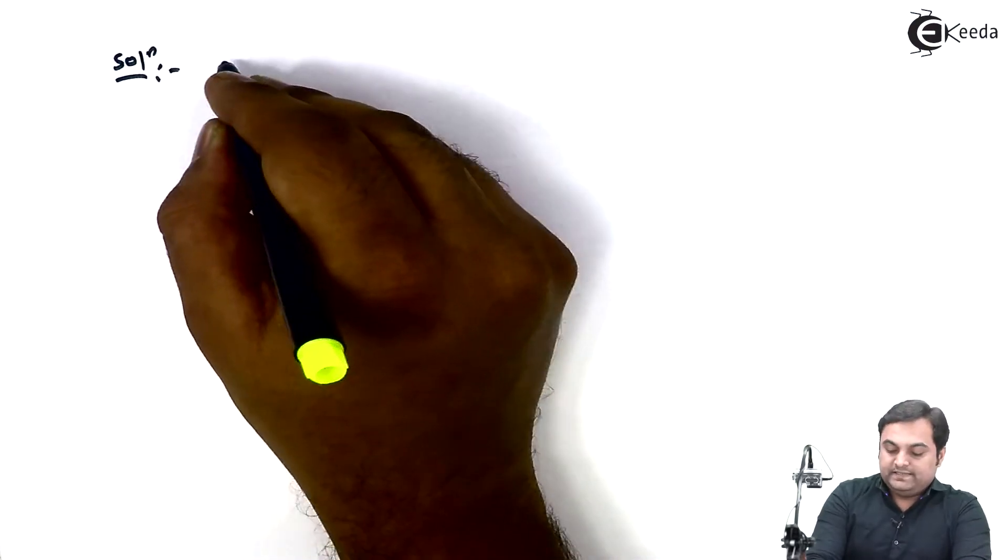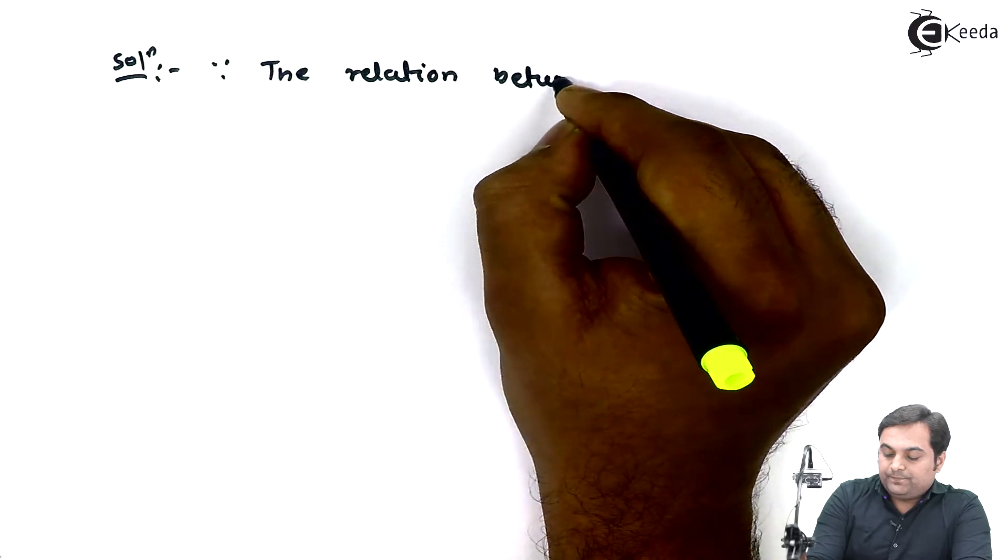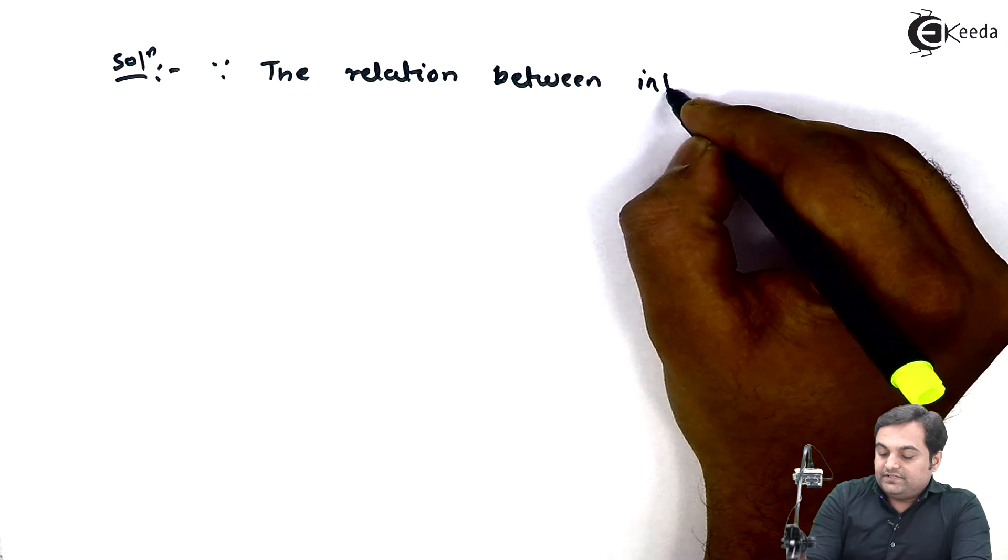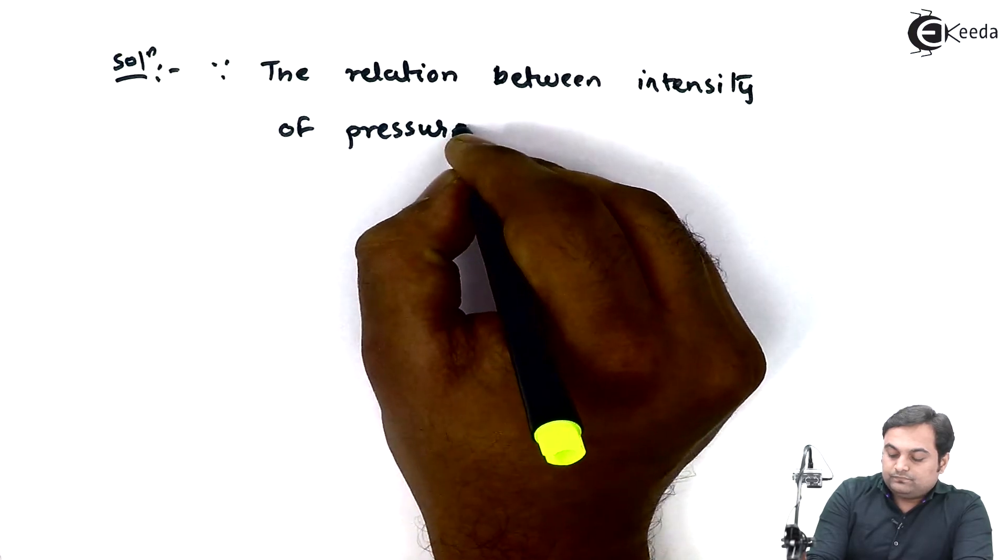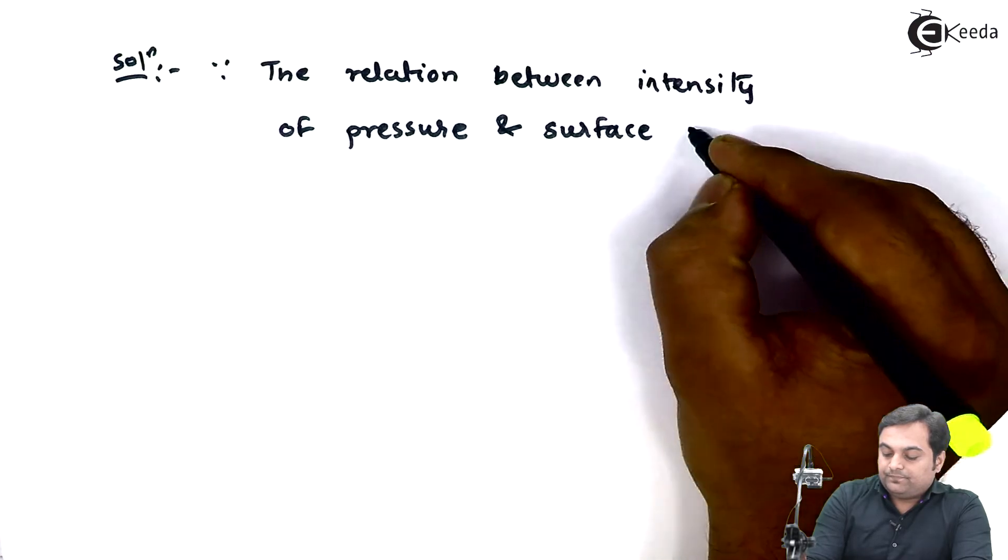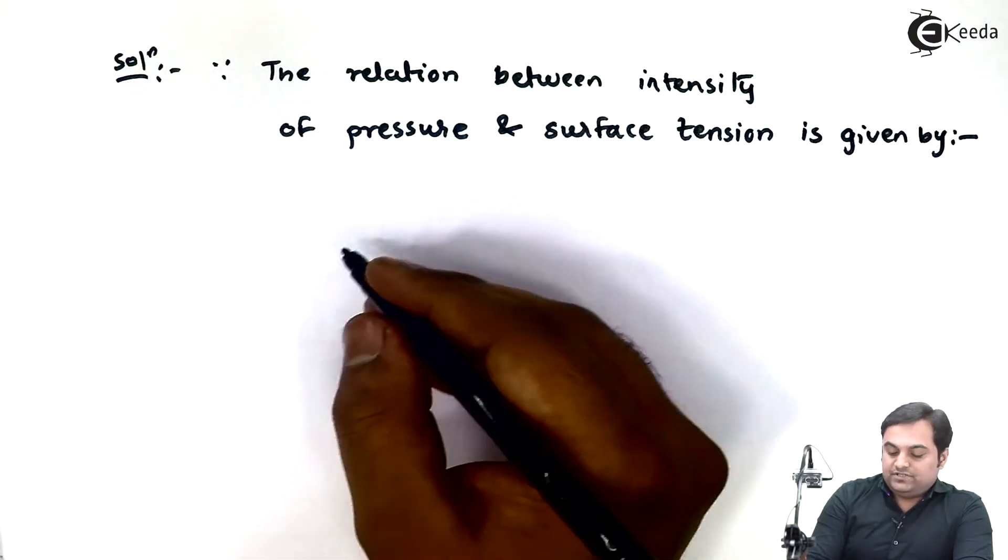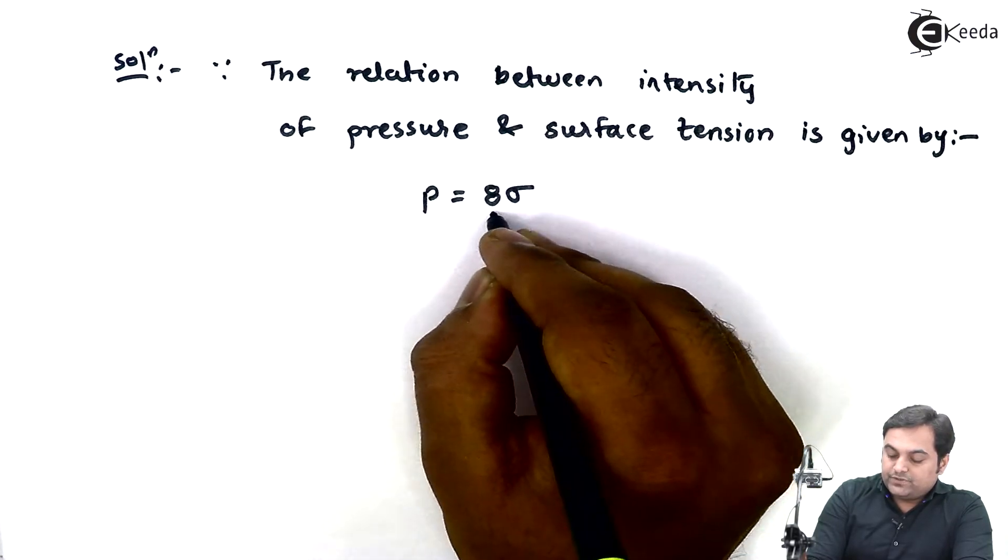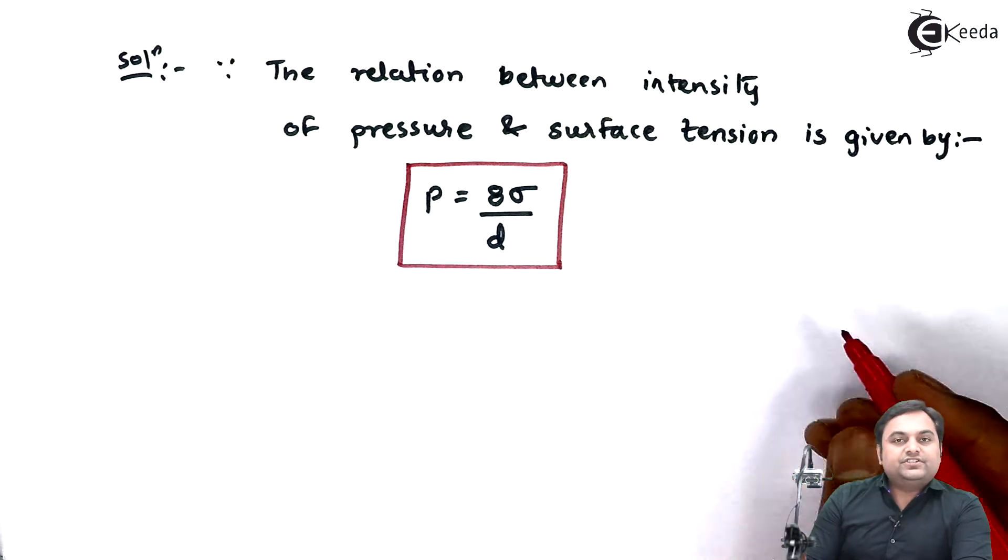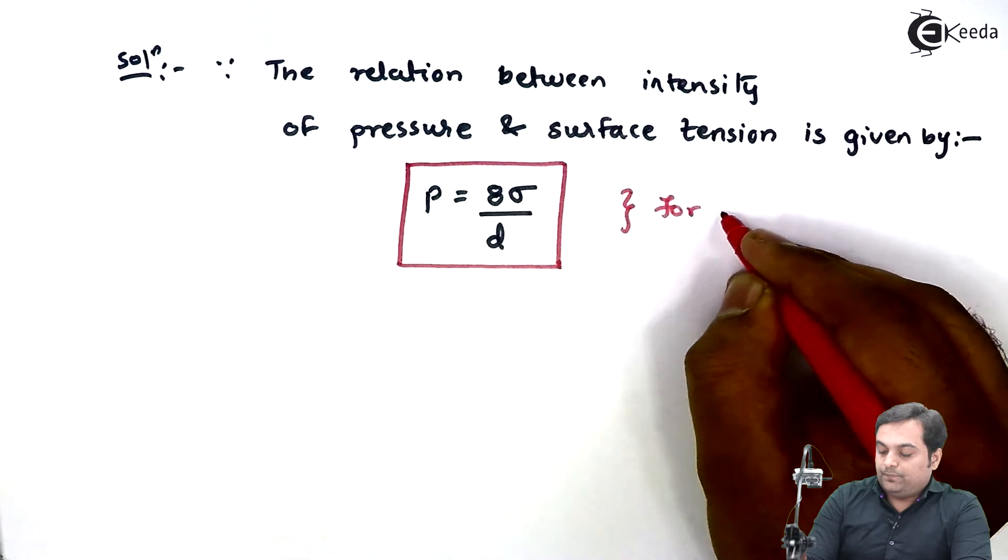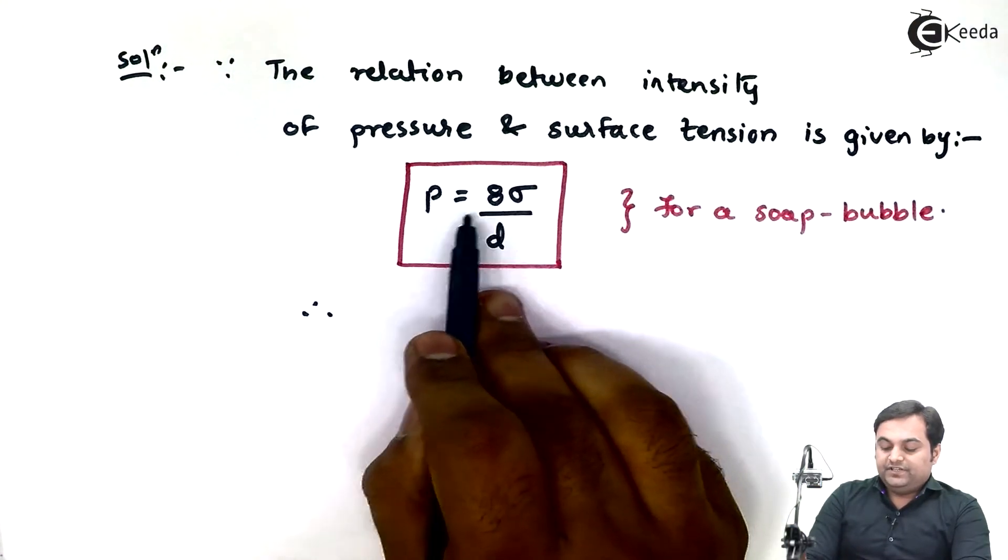In the solution, the relation between intensity of pressure and surface tension is given by P = 8σ/d. This relation is for a soap bubble. For a soap bubble, the pressure intensity and surface tension relation is given here.